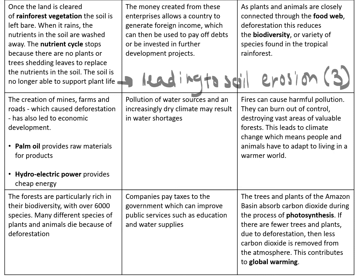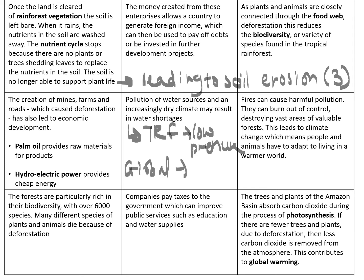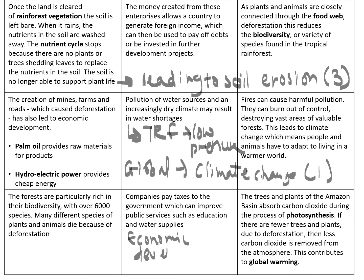The pollution of water sources and an increasingly dry climate may result in water shortages. This isn't specific to the tropical rainforest because they get lots of rainfall being in a low pressurised area — it's talking about other regions. So this is a global impact and is going to lead to climate change. Because this is a global impact, I would put this as either your one or your two. Companies pay taxes to the government, which can improve public services such as education and water supplies — this is referring to economic development and is positive for the country. It's a local impact but it's positive, so I would give that maybe an eight out of nine.